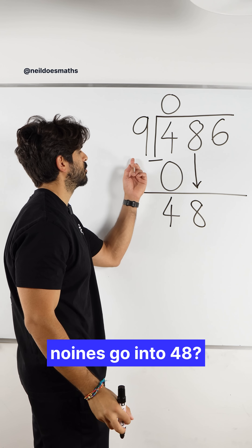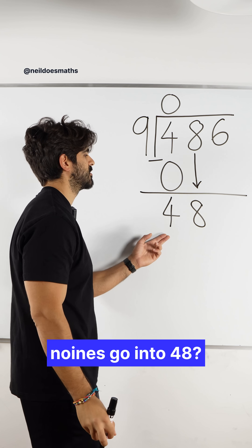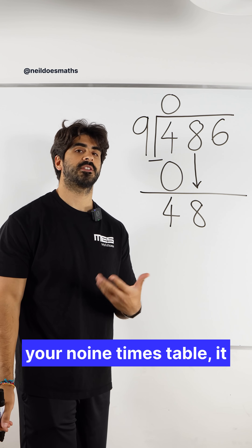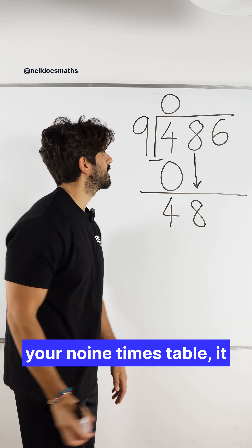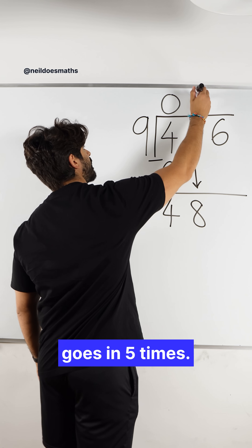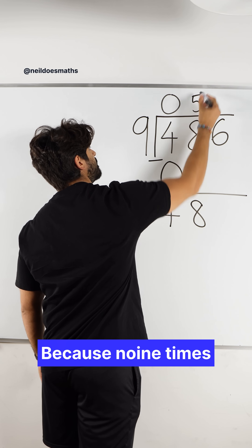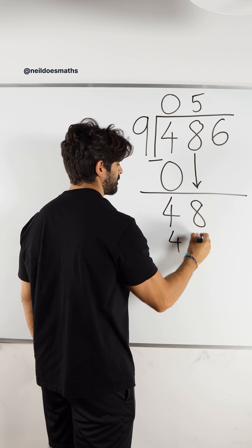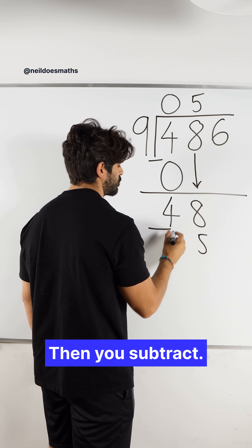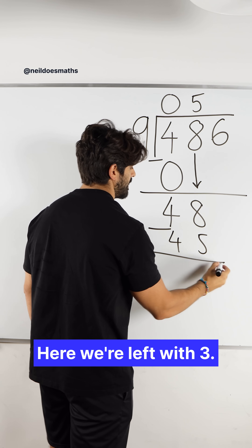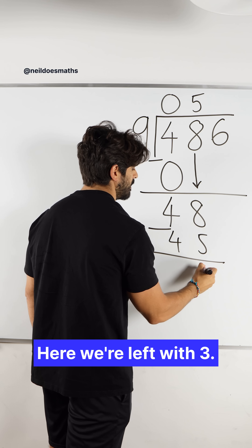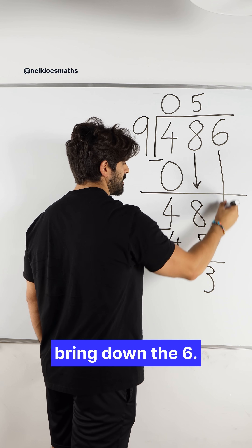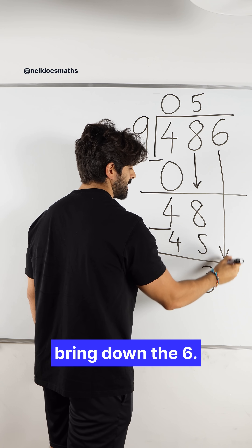Then we say how many nines go into 48. So all you need to know is your nine times table. It goes in five times, because nine times five is 45. Then you subtract. Here we're left with three. And then we bring down the six.